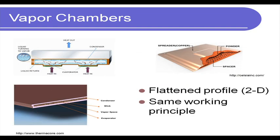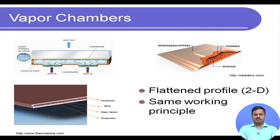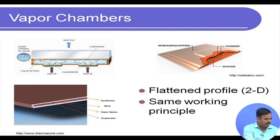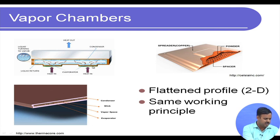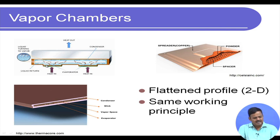Moving on to related devices: the vapor chamber works on the same principle as a heat pipe but is a two-dimensional structure. It acts as a heat spreader — a hollow two-dimensional casing with a wick along the internal wall. With multiple heat sources at the bottom and the entire top surface as the condenser, the liquid boils off, vapor rises to the condenser where it cools and returns via wicking action. It is essentially a planar, two-dimensional flat-profile heat pipe.